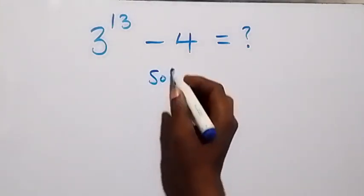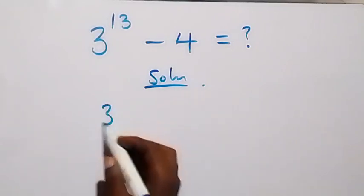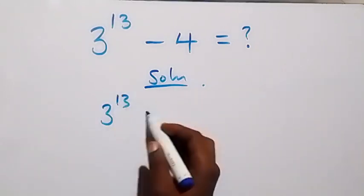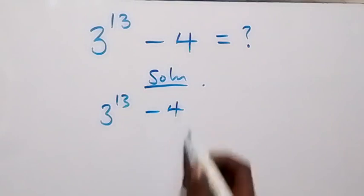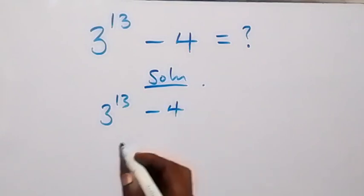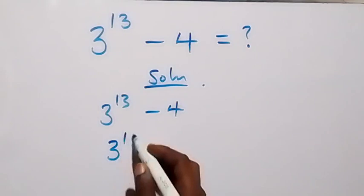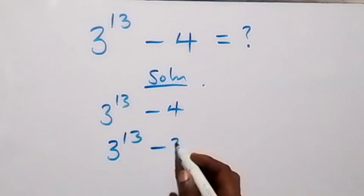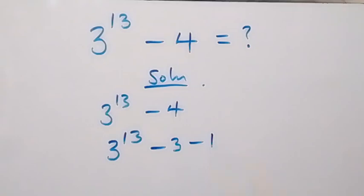From here, what we have is 3 raised to power 13 minus 4. Here we can write this as 3 raised to power 13 minus 3 minus 1.